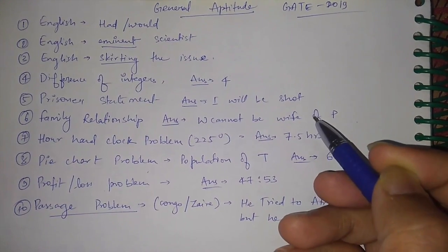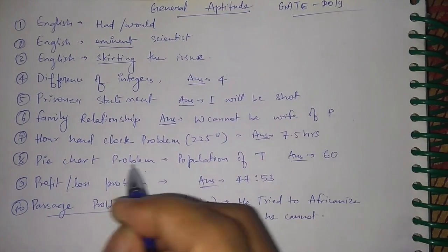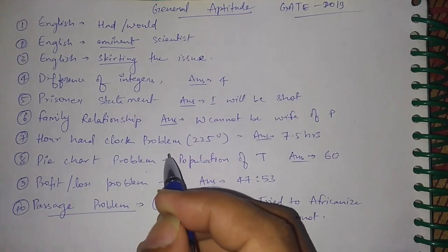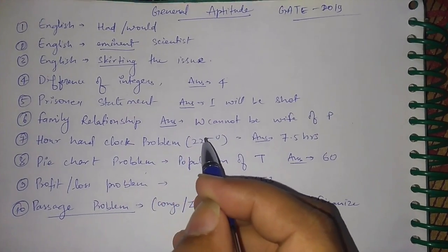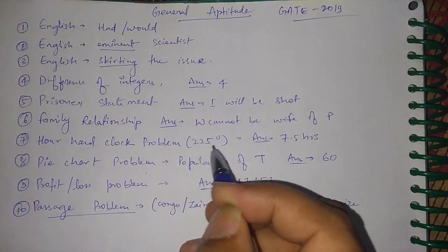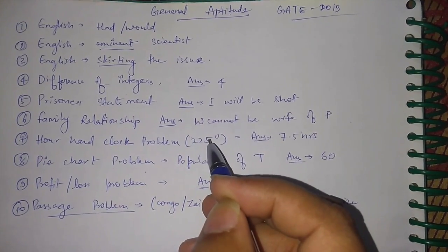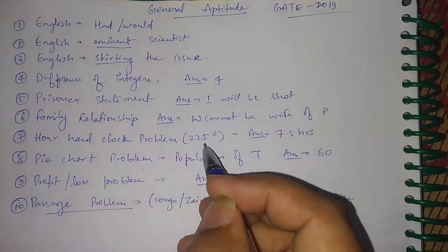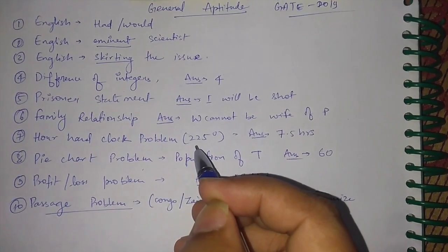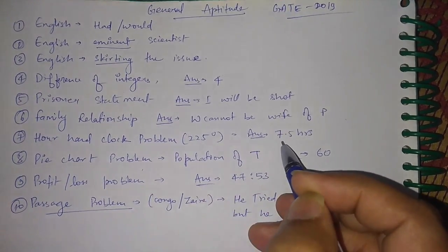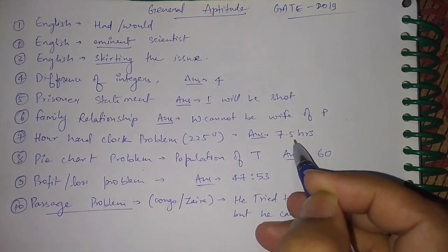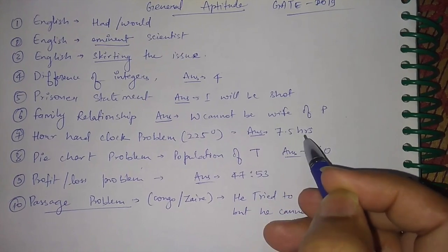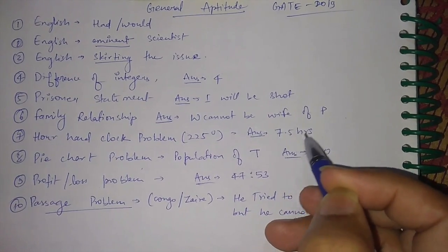There was a question on a clock problem where the hour hand of the clock is moved by 225 degrees. The answer for that is 7.5 hours, or 7 hours and 30 minutes.